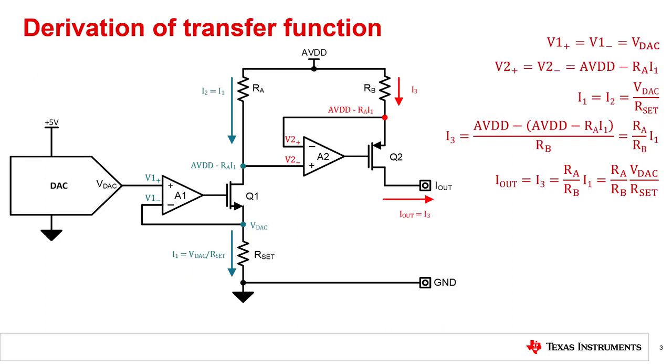This slide will walk through the derivation of the transfer function for this standard 3-wire current output topology. First, negative feedback of the A1 amplifier since V1 plus and V1 minus equal to each other. The input to the transmitter, Vdac, is tied to V1 plus, making V1 minus also equal to Vdac.